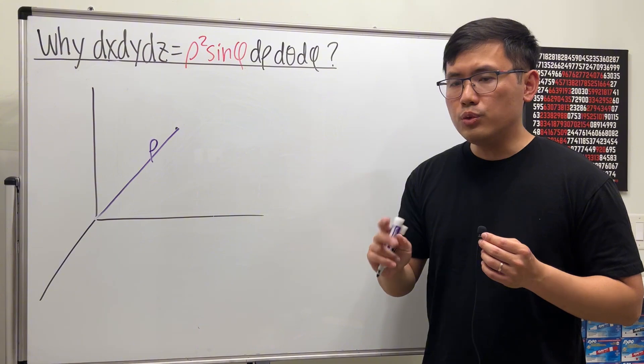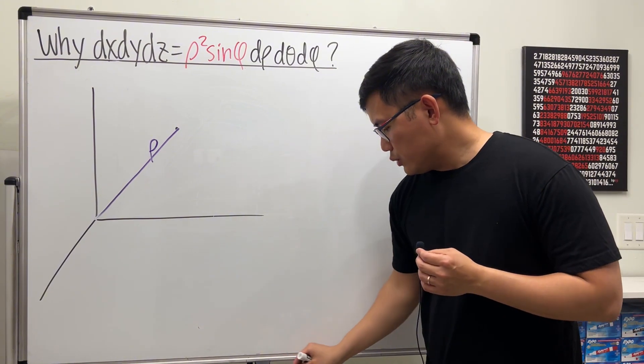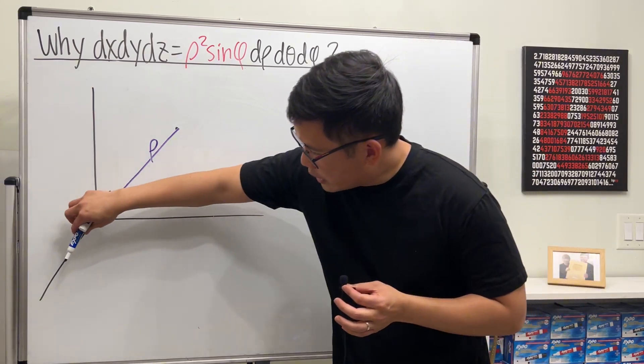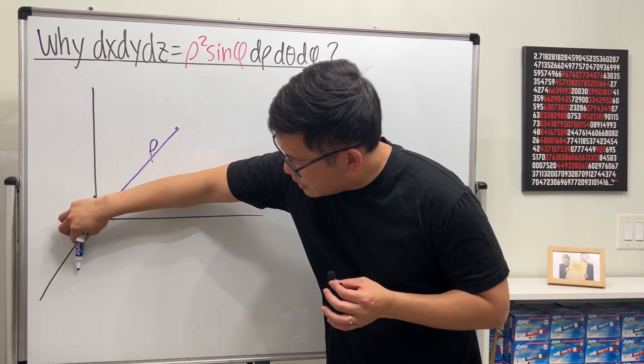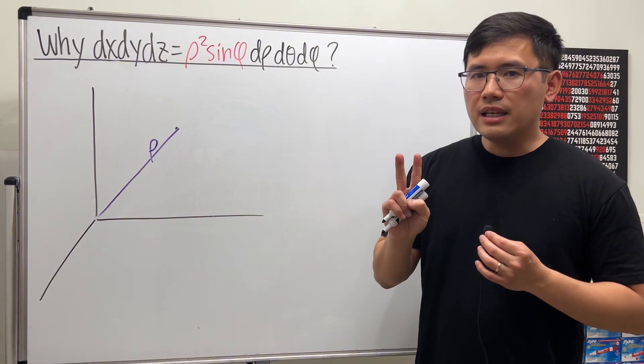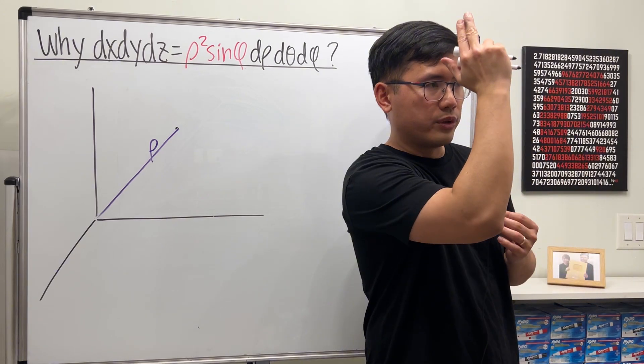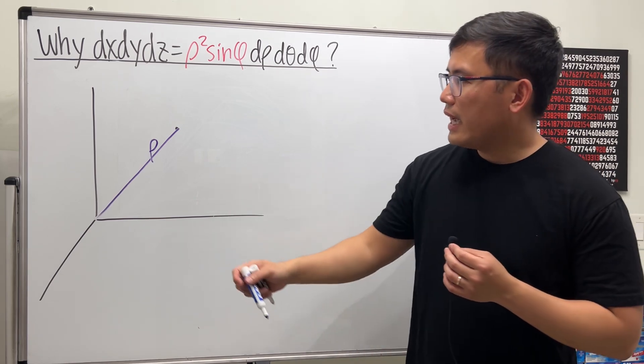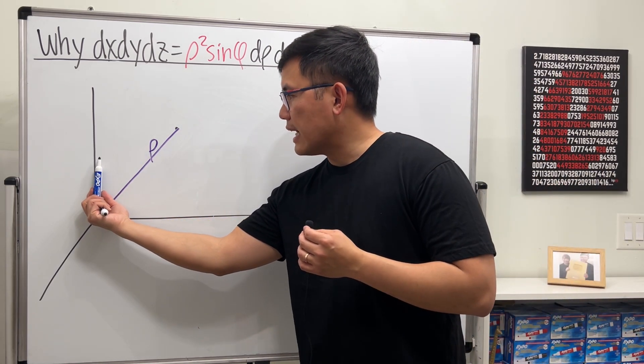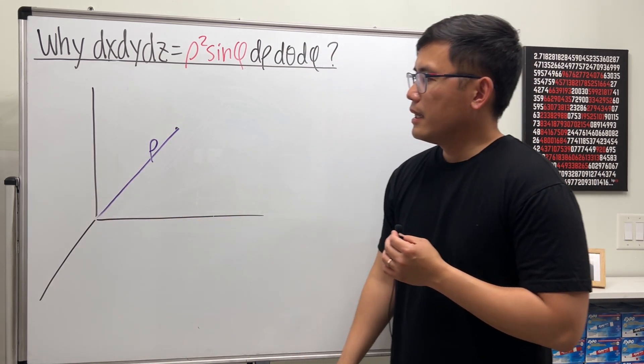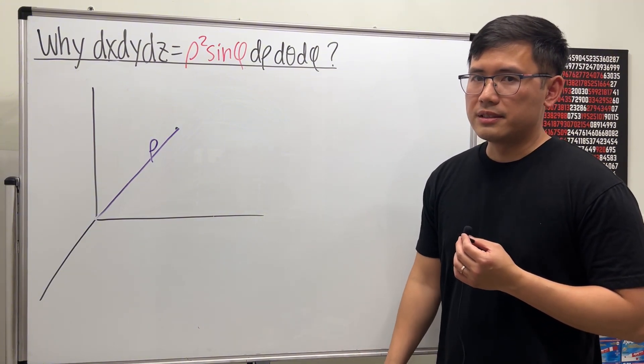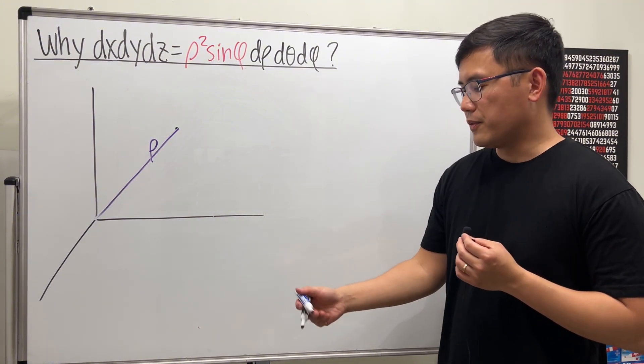Then we have to do two rotations. The first rotation is we rotate our body from the positive x-axis. Then the second rotation is we rotate our arms so we can aim the fly over there. That's the rotation from the positive z-axis to here. The hard part is how to draw the picture to make this clear.